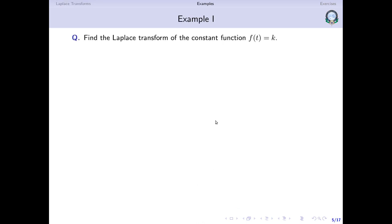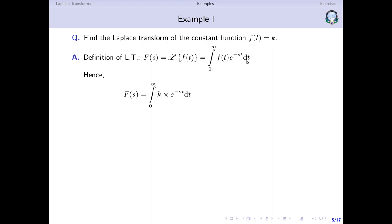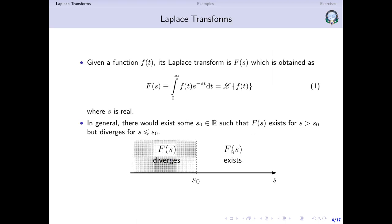The first example is a very simple function. We want to find the Laplace transform of the constant function f of t equal to k, meaning the function has the same value k for all values of t. By the definition of the Laplace transform, F of s equals the integral from 0 to infinity of k times e to the power minus st dt. We take k outside as it is a constant, giving k times the integral from 0 to infinity of e to the power minus st dt. Integrating, we get minus e to the power minus st divided by s, evaluated from 0 to infinity.